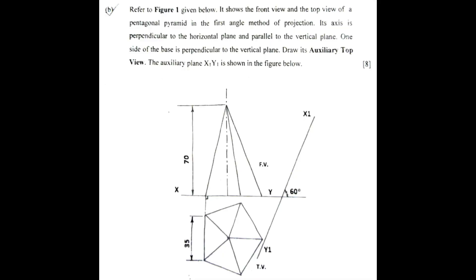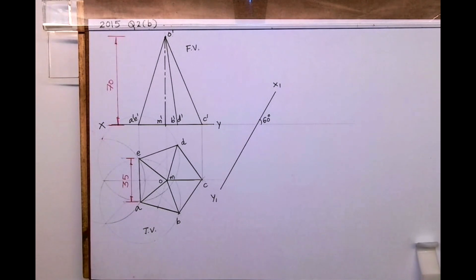Welcome to technical drawing. Today we will see this problem where we need to draw an auxiliary top view. Front view and top view are given to you, and they have already given you the auxiliary plane. This is ICSE 2015 TDA paper question 2B. First, we need to draw the given front view and top view of a pentagon.